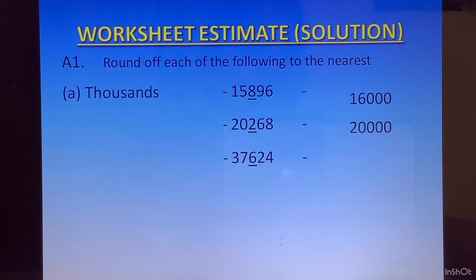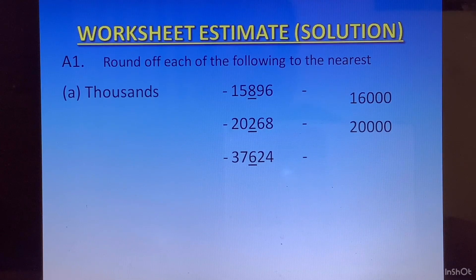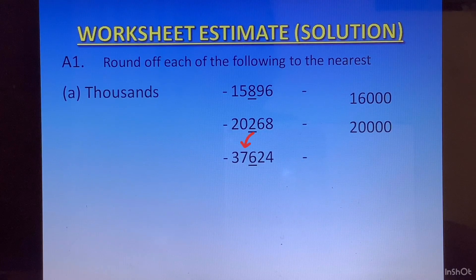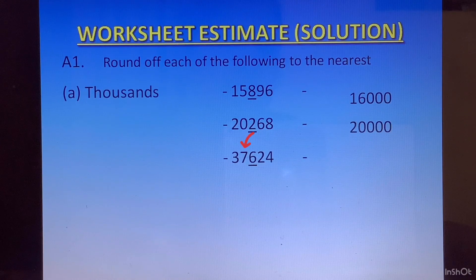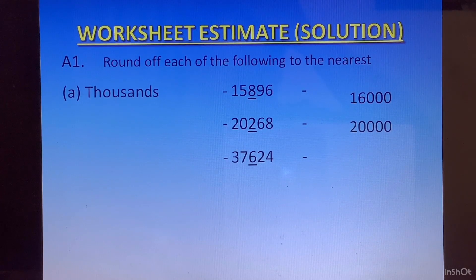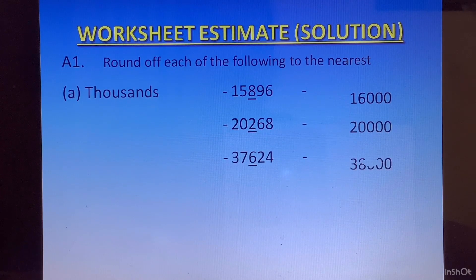The third number: 37624. 6 is at the hundreds place. 6 is greater than 5, so we will increase the digit at the thousands place by 1. That is 7 will become 8, and all the digits on the right — 6, 2, and 4 — will become 0. The answer will be 38000.